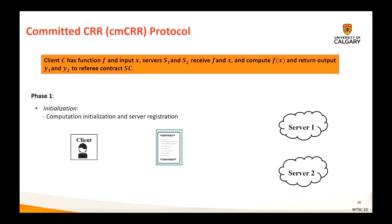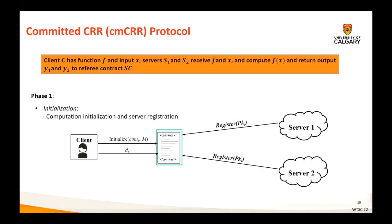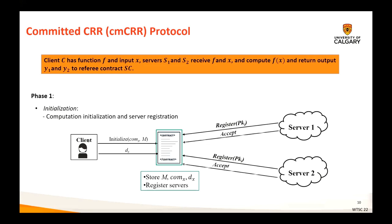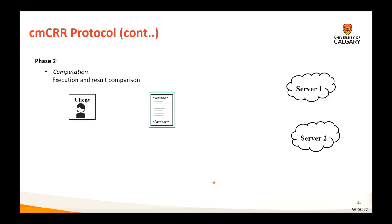Our protocol consists of three main phases: initialization, computation, and dispute resolution. During the initialization phase, the client sends a transaction by calling the initialize function of the referee smart contract that contains the function to compute and a commitment to the input. Upon seeing the initialization transaction, the servers register themselves for the computation. Once both servers are registered, the client opens its commitment to the input by revealing the opening value DX. Both servers verify whether the opening of the commitment is correct. If true, they accept the computation job by sending an accept message to the smart contract; otherwise, they abort.